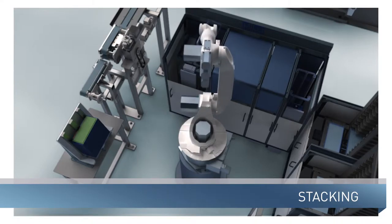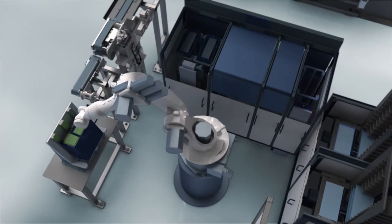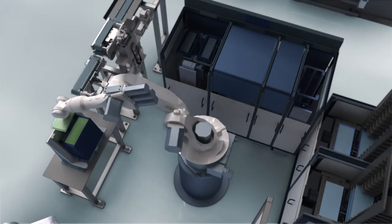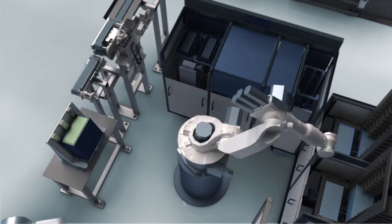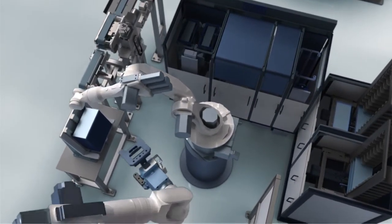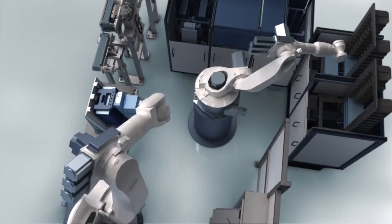The robot installs a spacer frame between the individual cells and then places a cover on it. Then it tightens, removes, and secures the module.